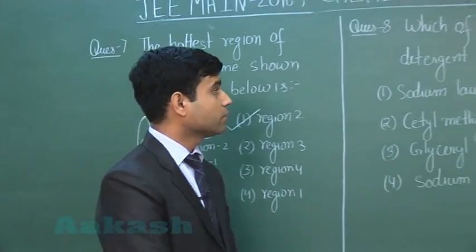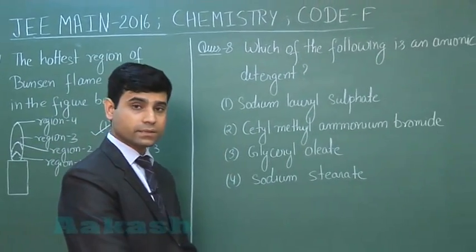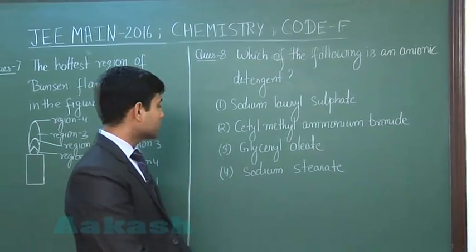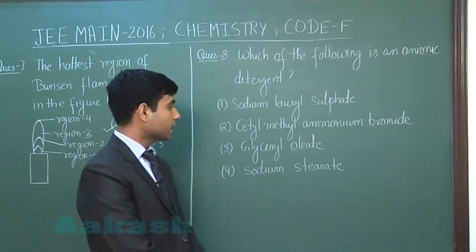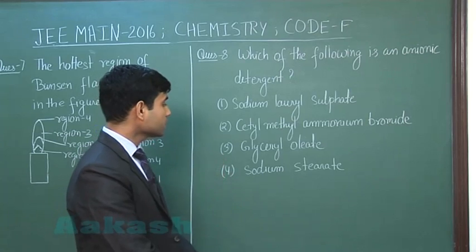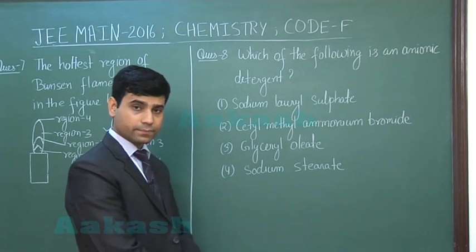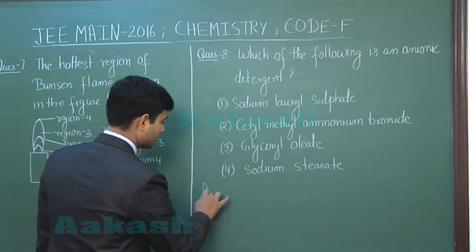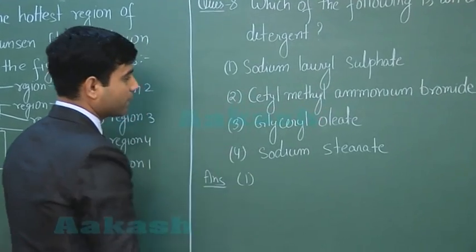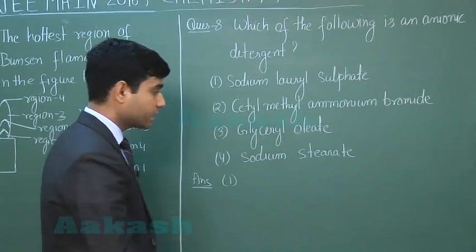Now let us move to the next question, which asks: which of the following is an anionic detergent? The first option is sodium lauryl sulfate, the second option is cetyl methyl ammonium bromide, the third option is glyceryl oleate, and the fourth option is sodium stearate. The first option, sodium lauryl sulfate, is an anionic detergent.